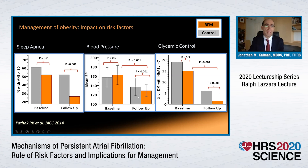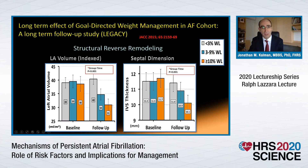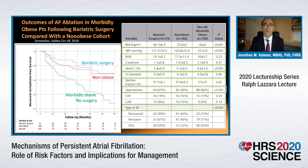When patients lose weight, a number of risk factors are impacted: sleep apnea improves, blood pressure improves, and glycaemic control improves. With this, there is evidence of structural reverse remodelling — left atrial volume index decreases in a dose-responsive manner, and septal dimension decreases in a dose-responsive manner. So underpinning the improvement is indeed evidence of reverse structural remodelling.